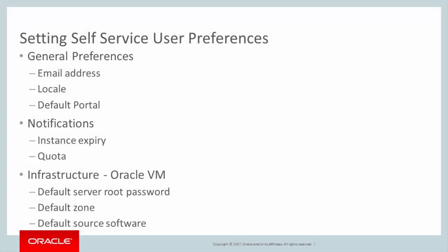General preferences for the self-service user support the reporting of notifications. The user's email address can be set and the locale for notification messages can be selected from the options presented. The self-service user can also select the default portal that appears on login.